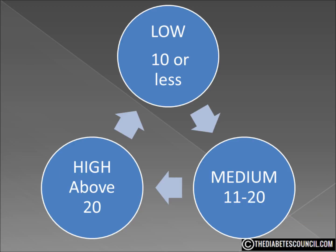A food with a GL of 10 or less is considered low. A food with a GL of 20 is considered high.